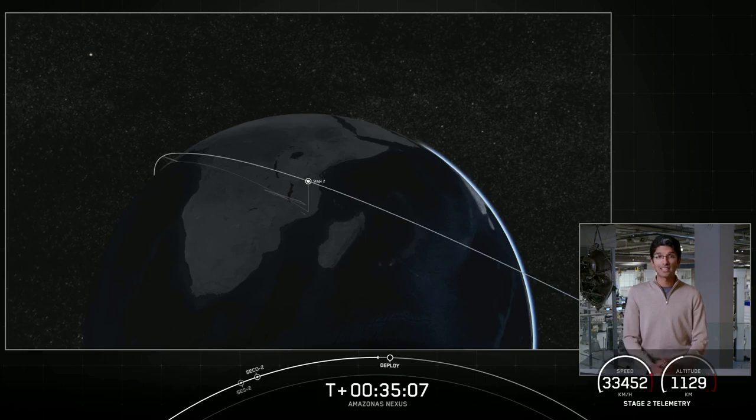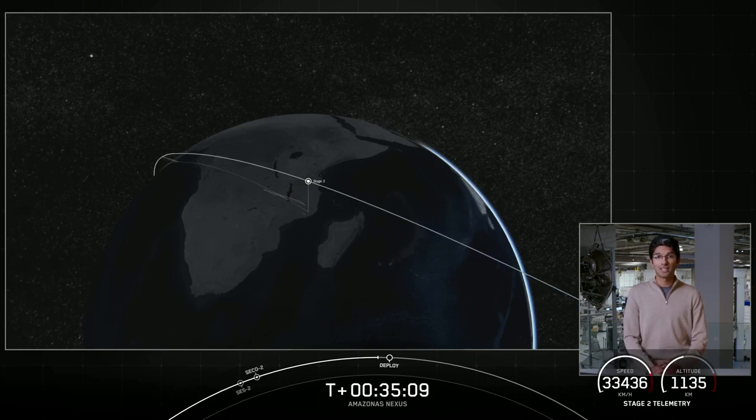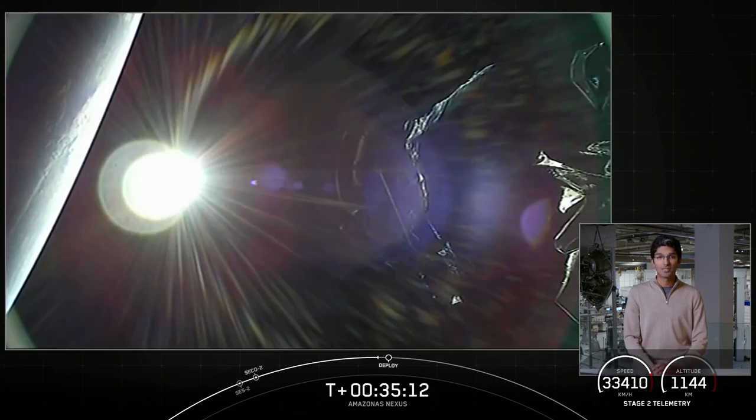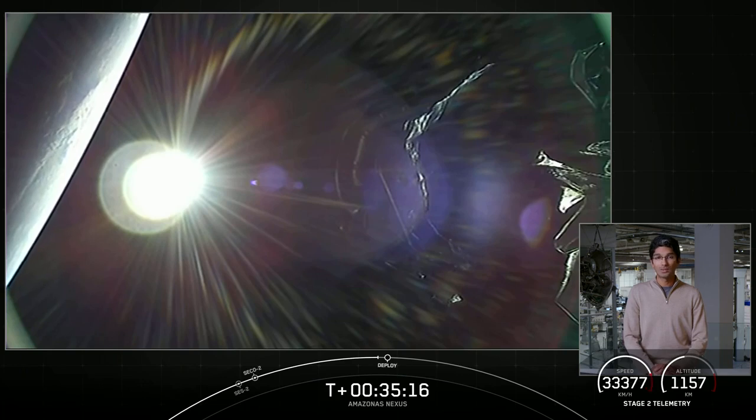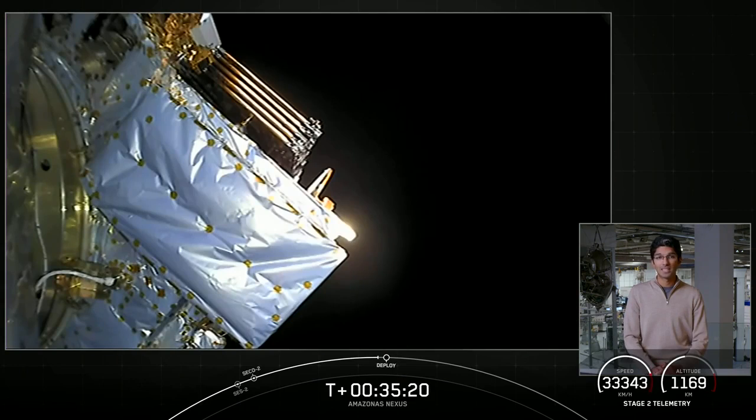The Amazonas Nexus satellite has an all-electric propulsion system that makes it a lighter satellite and reduces the cost of putting it into orbit. And following deployment into this geosynchronous transfer orbit, the satellite's going to exercise a few of its systems to get into its final operational geostationary orbit.